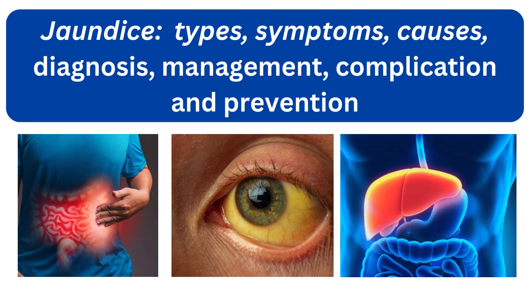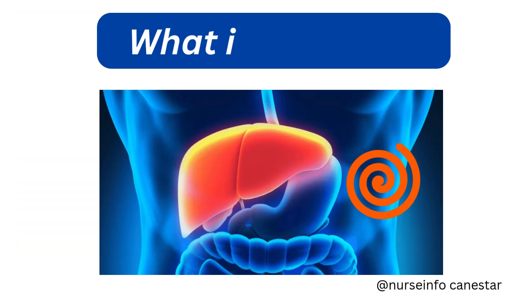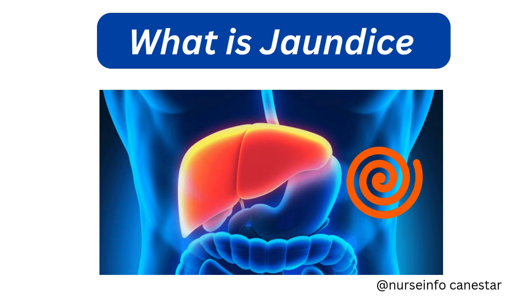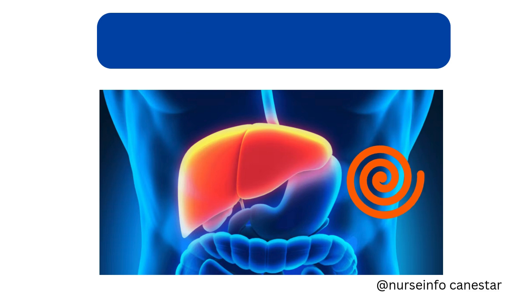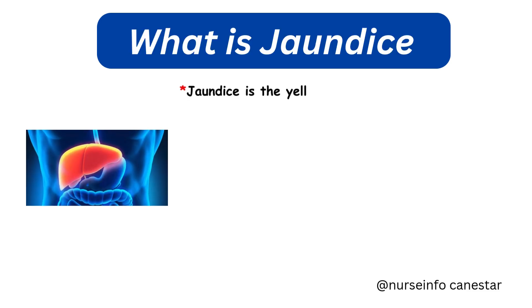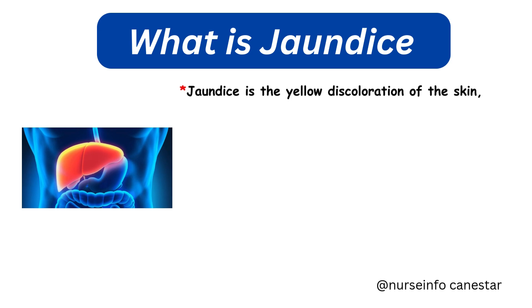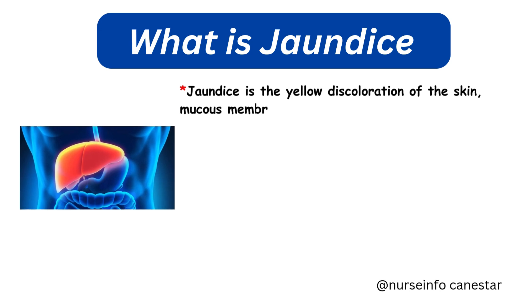Bilirubin, a yellow pigment, is produced during the natural breakdown of red blood cells. Normally, the liver processes bilirubin and eliminates it through bile, which is eventually excreted in the stool.